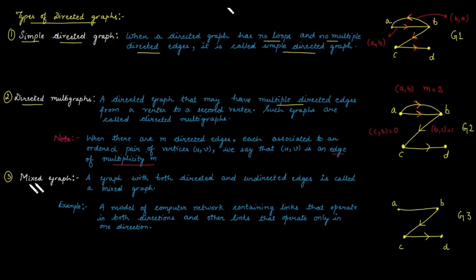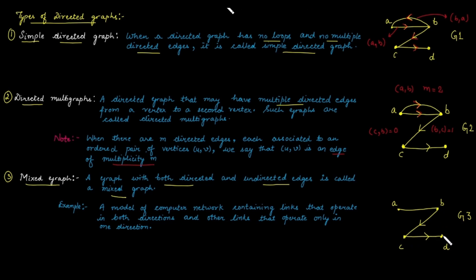The next case is a mixed graph. A mixed graph is a graph that has both directed and undirected edges. G3 is an example: there is an undirected edge between vertex A and B, but there are two directed edges — one from B to C and one from C to D. The best real-world example of a mixed graph is modeling a computer network, where certain links operate in both directions and certain links operate in only one direction.